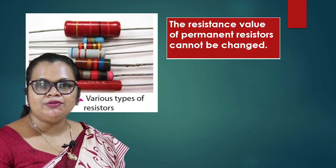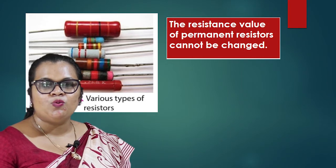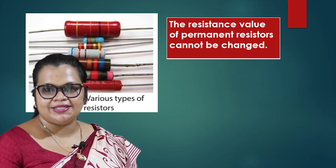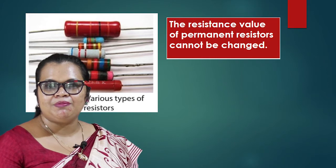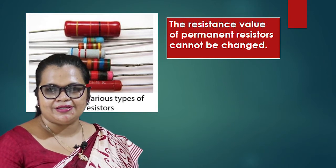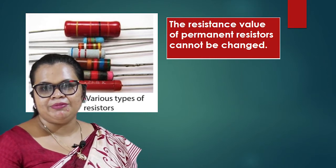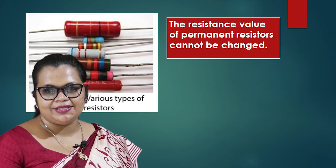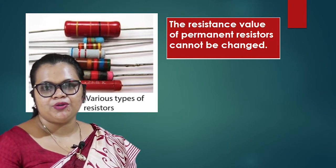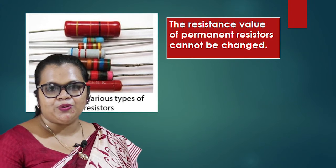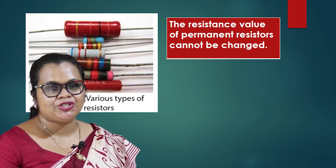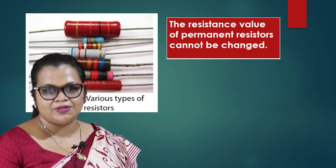As observed earlier, once we increase the resistance of the circuit, the brightness of the bulb decreases. So it is confirmed that once resistance increases, it decreases the current flow through the circuit. The standard international unit of measuring resistance is ohms.